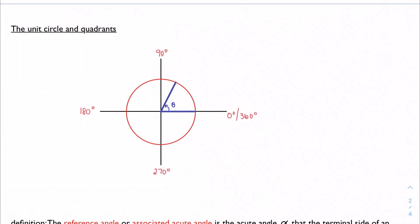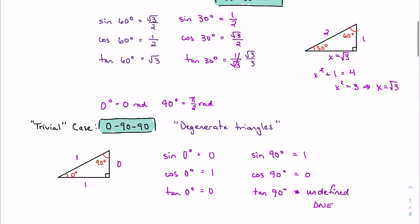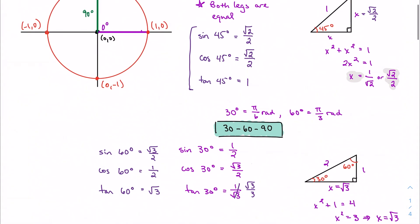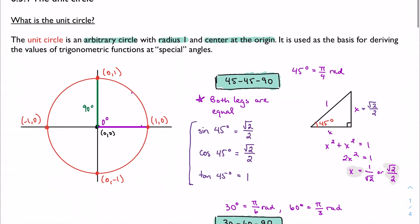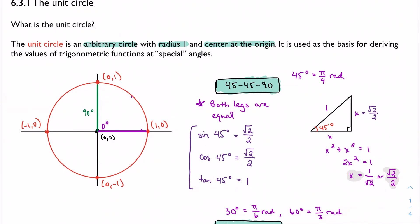Moving on in 6.3, starting to apply some of what we just talked about with the building blocks of some of these special angles. We'll talk about what happens when we start to move out of that first quadrant of our graph. All of the angles we've talked about so far — 0, 90, 30, 60, 45 — they're all stuck in this first quadrant of our graph, between 0 and 90 degrees.